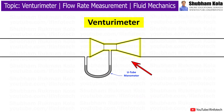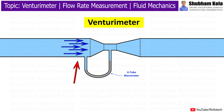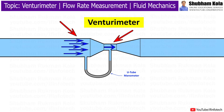The Venturimeter should be installed in a stretched section of pipe where fluid flow is fully developed. When the fluid passes through the Venturimeter, there is no pressure difference at the inlet. But at the throat, the velocity increases and there is a decrease in pressure. This is due to the decreasing cross-sectional area from inlet to throat.